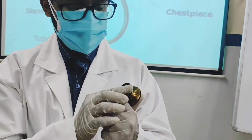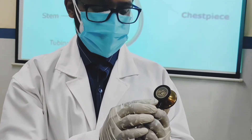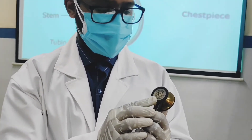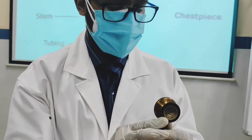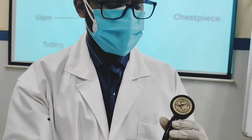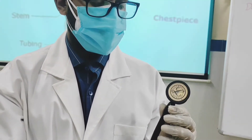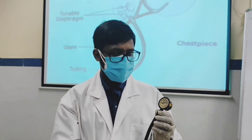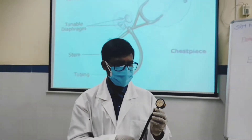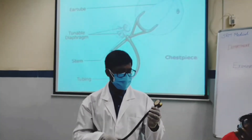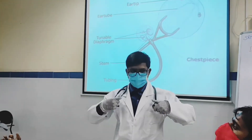The bell of the stethoscope is used to auscultate low-pitched sounds and murmurs like S3, S4, and mid-diastolic murmur. The diaphragm of the stethoscope is used to auscultate high-pitched sounds and murmurs like S1, S2, clicks, opening snap, systolic murmurs, and early-diastolic murmurs.